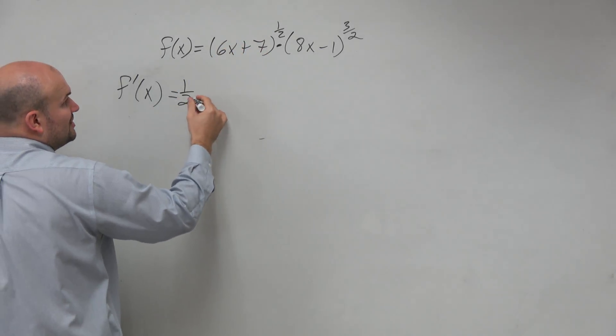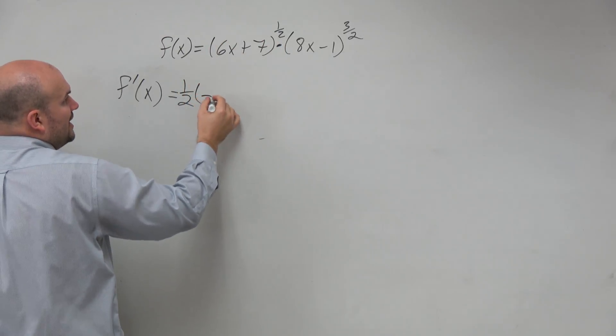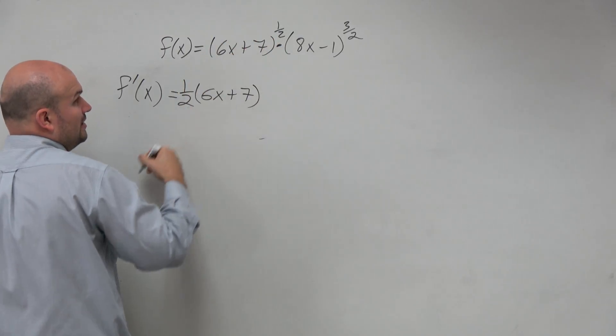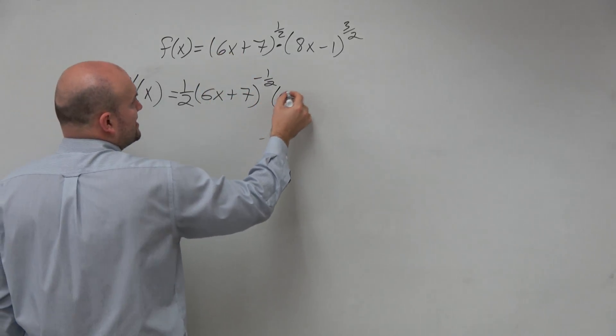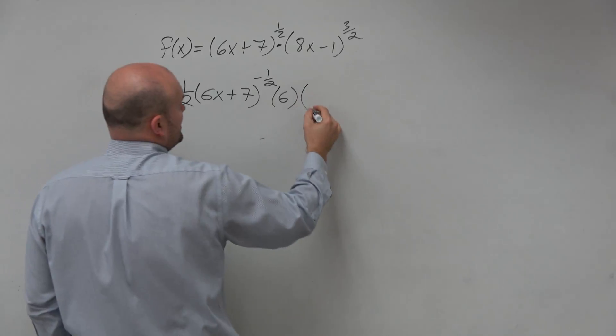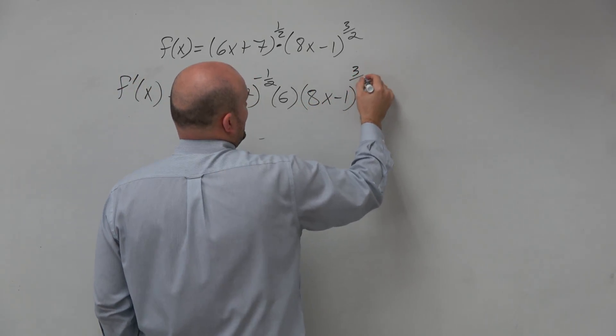Inside function is 6x plus 7. So bring down the 1/2, take 6x plus 7, subtract 1. 1/2 minus 1 is negative 1/2, multiply by the derivative of the inside, which is 6, times the second function, 8x minus 1 raised to the 3/2.